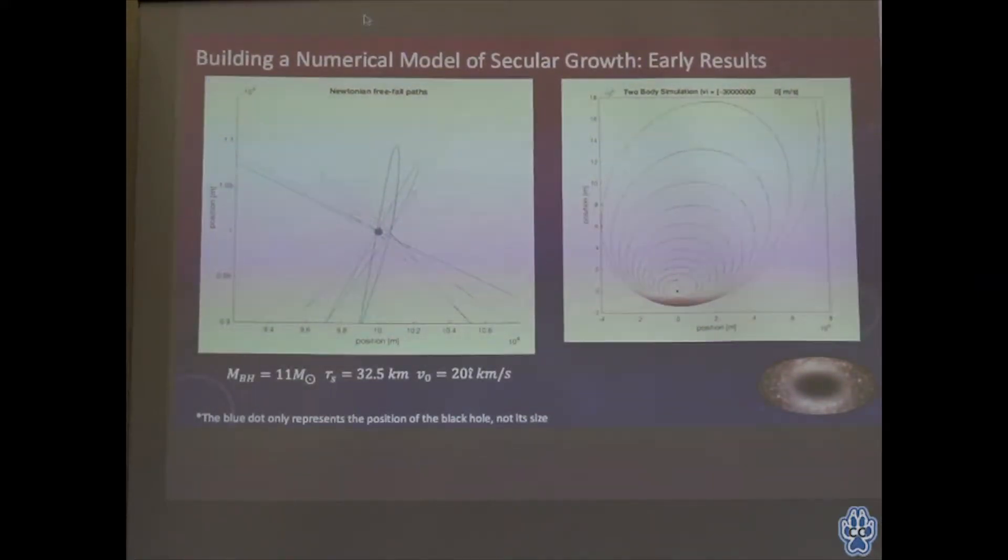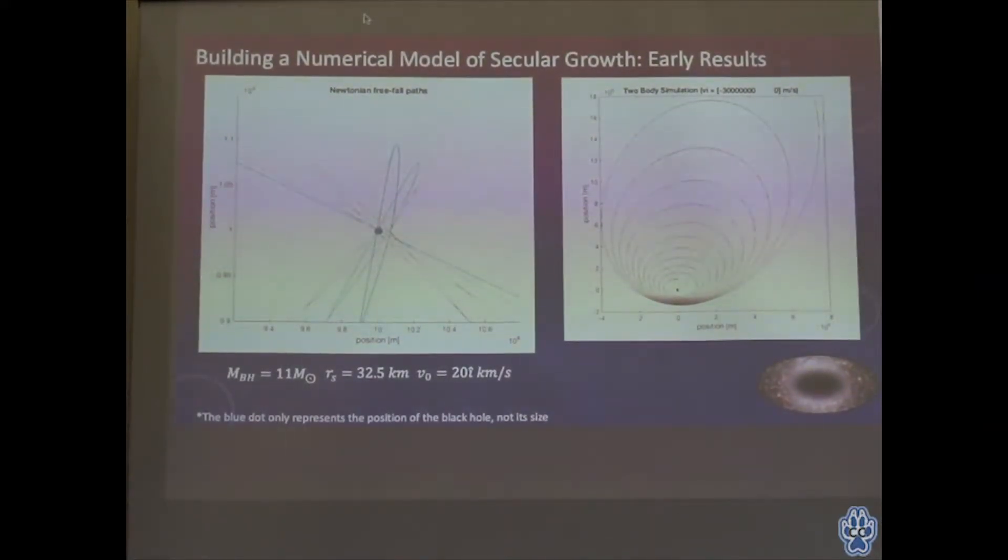This contributes to my point that black holes are not sucking in everything they come in contact with—they're just another gravitational object. I also encountered some errors developing my code. On the right, the tracer particle starts here, this is the black hole singularity, and instead of falling in or being captured in a stable orbit, the orbit actually seems to increase, which violates conservation of energy.